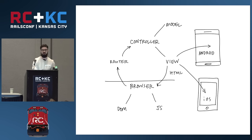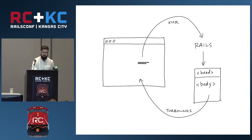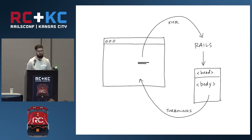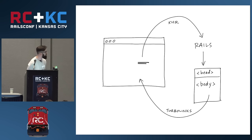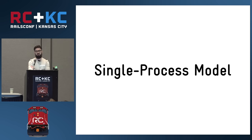Turbolinks turns your traditional web application into a single-page app. At a high level, it intercepts link clicks on your page and turns them into AJAX requests. Your server renders a full HTML response and Turbolinks loads that response — pulls out the head and merges it with the current page's head, pulls out the body and outright replaces it. From the server's perspective, nothing changes. But the client adopts a single-process model, which means it doesn't incur the expense of reloading and reprocessing assets on each page change, or reestablishing WebSocket connections, giving you a significant performance boost.